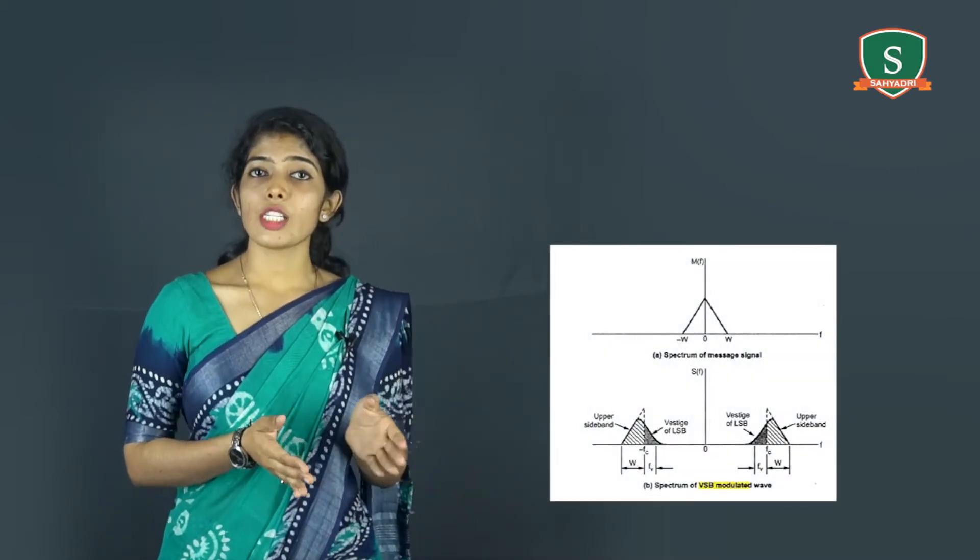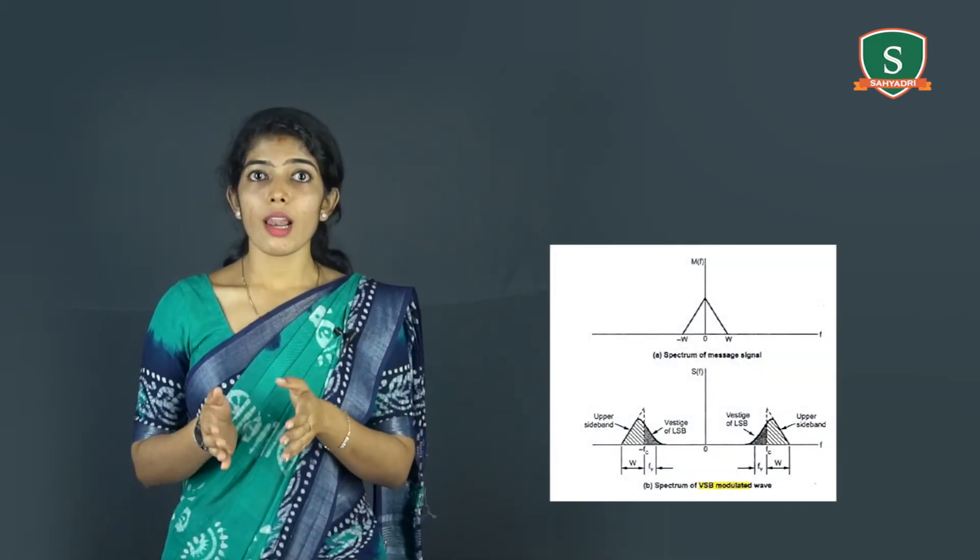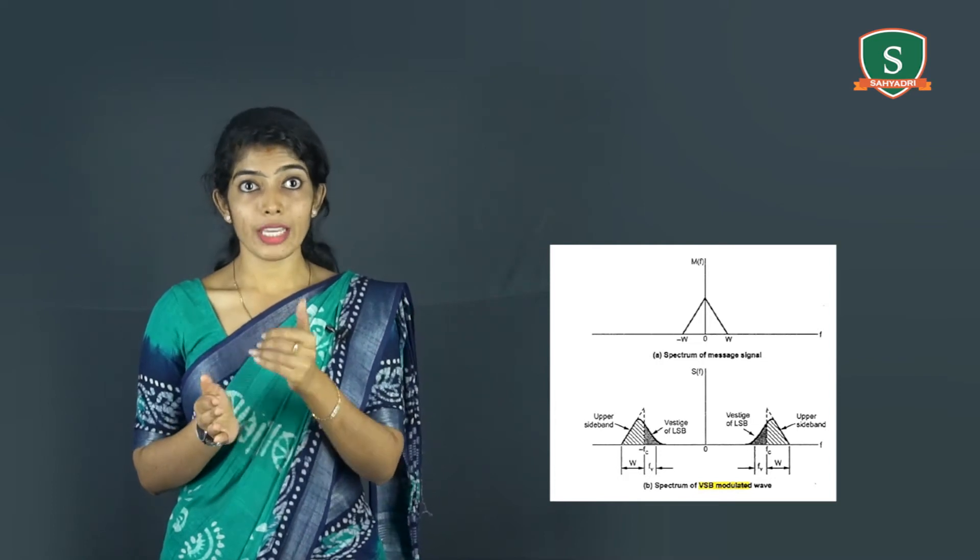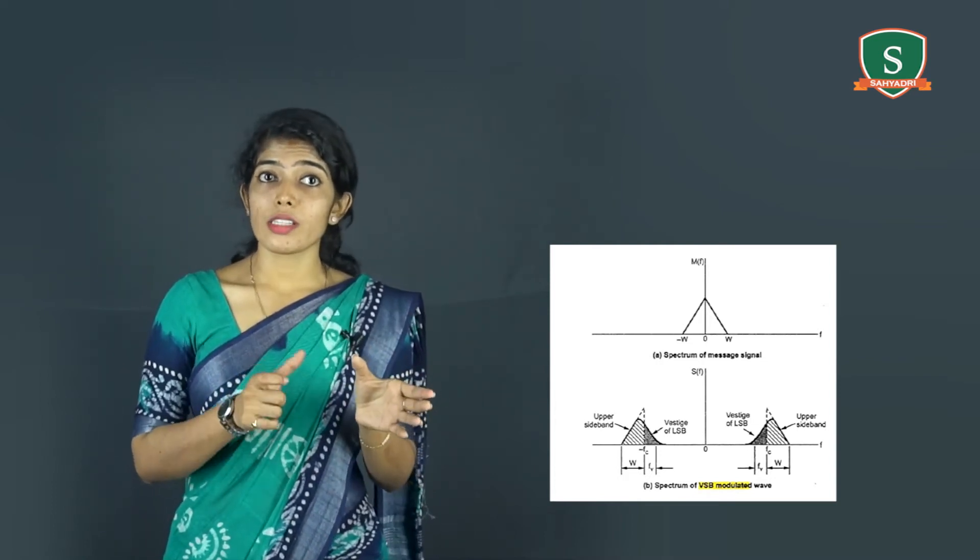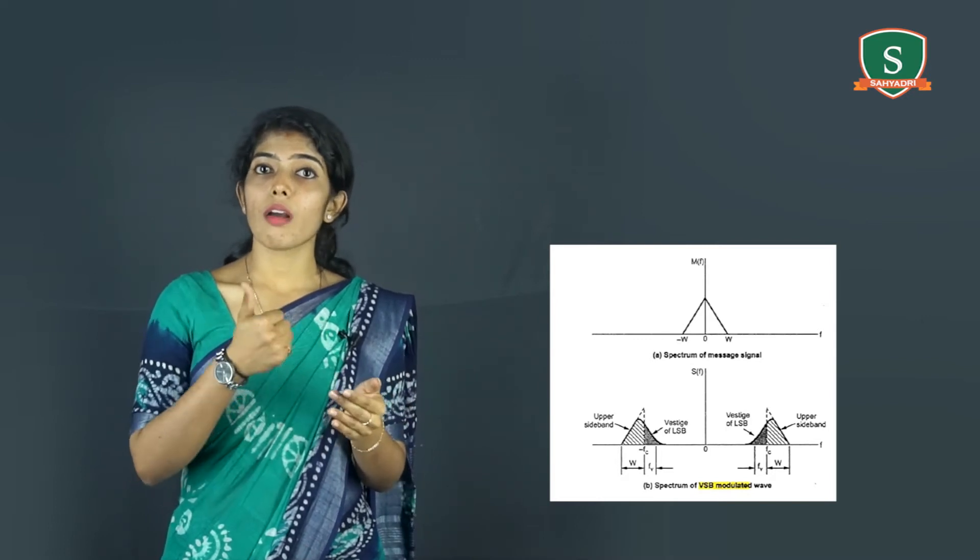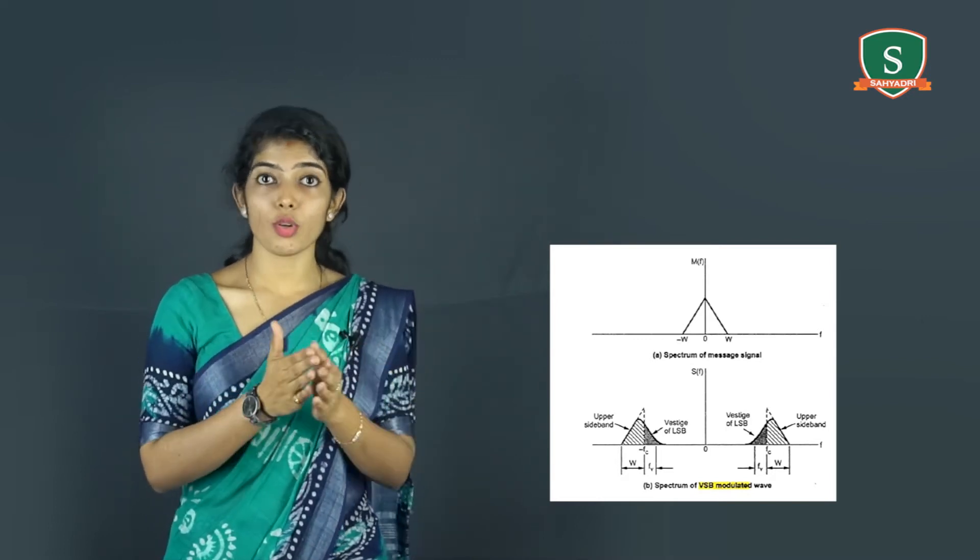This figure shows the spectrum of VSB modulated wave S(t) along with the message signal M(t). Here, LSB is modified into vestigial sideband. The amount removed from the USB compensates for the transmitted vestige of LSB.